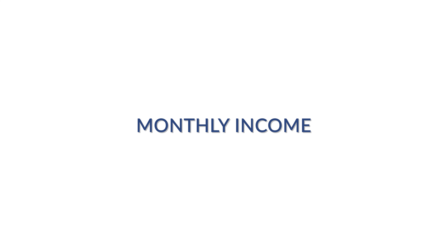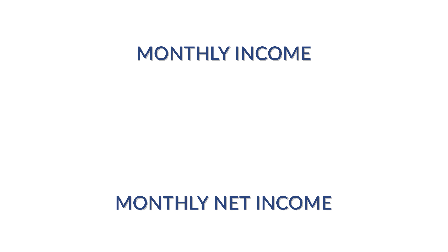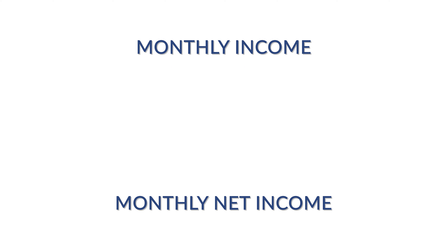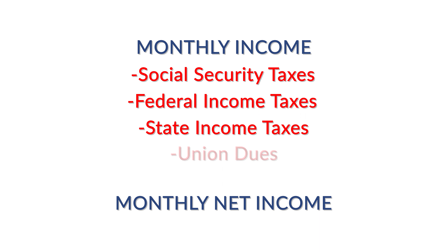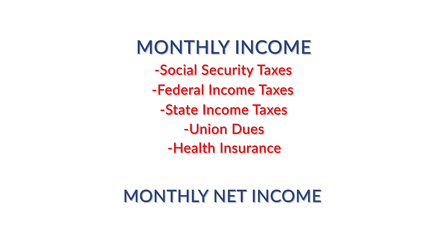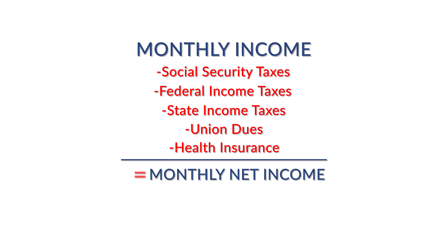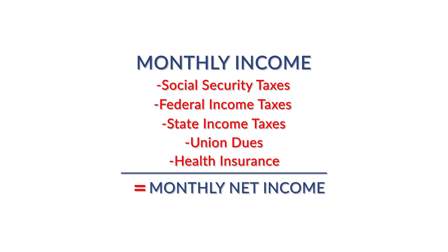Once the monthly income is established, we must then apply a handful of deductions to reach the monthly net income figure. The Texas Family Code allows us to deduct social security taxes, federal income taxes, and state income taxes as well. When applicable, we may also deduct mandatory union dues as well as the monthly cost for the children's health insurance coverage, should the obligor be providing said coverage.